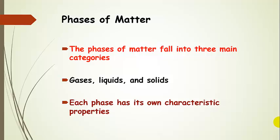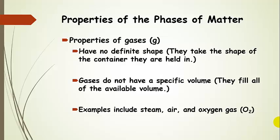Now phases of matter. We have three main categories — there are two others, but we're mostly going to deal with the basics: gases, liquids, and solids, which you're probably already familiar with. Each phase has its own characteristic properties. Gases have no definite shape — when you put a gas in a container, it's just going to take the shape of the container. They also don't have a specific volume; if you put a gas in a container, it's going to fill the whole volume. Some examples of gases are steam — that's water vapor in air — and oxygen gas.